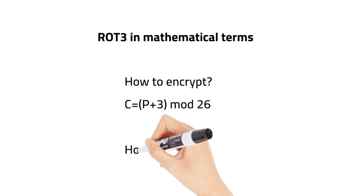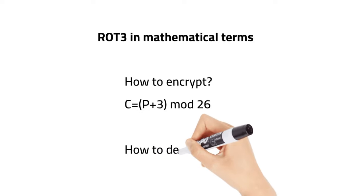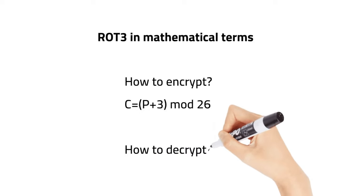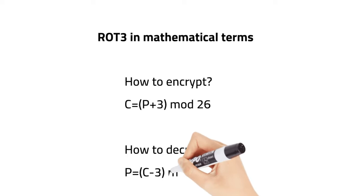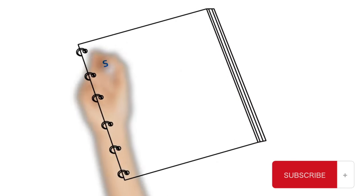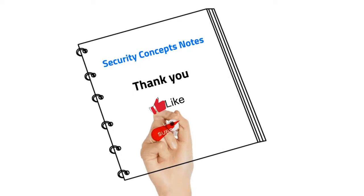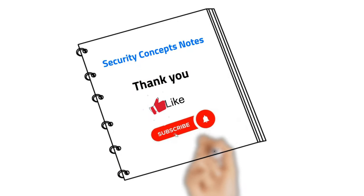In our upcoming video, we will see what is Vigenère cipher, which is a poly-alphabetic substitution cipher. Thank you for watching my video — make sure to subscribe, like, and don't forget to hit the notification bell. Bye!